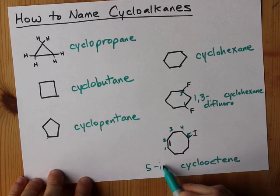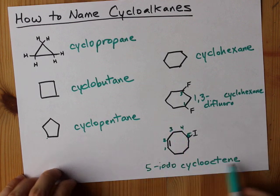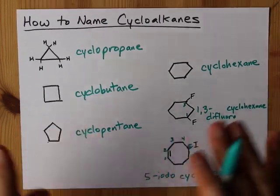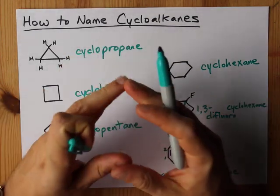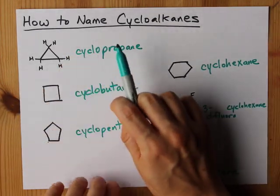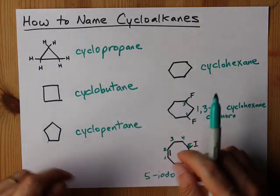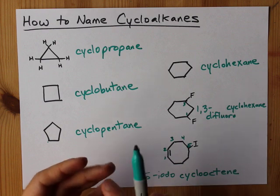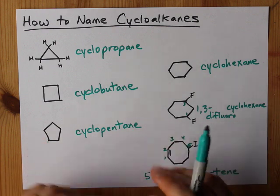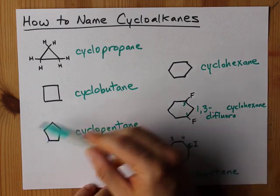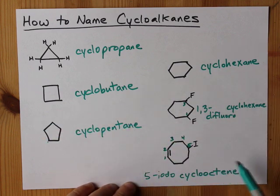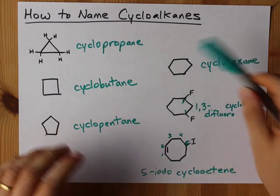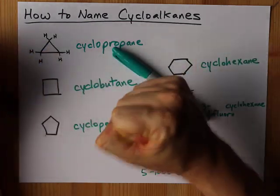We'll call this 5-iodocyclooctene — no space, it's all one word. The idea is that cyclo represents the fact that it's a ring. You'll use the same prefix you would use as if they were in a straight chain: prop, but, pent, hex, hept, oct, non, dec, whatever. Then you'll have -ane if they're all single bonded, or -ene depending on what else is going on in the molecule. Not too bad — pretty easy. Best of luck to you.